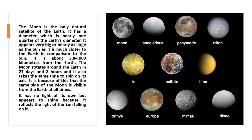Moon is a natural satellite of the earth. Its diameter is nearly one quarter of the earth and it looks almost as big as the sun because it is very close to the earth. It is about 3,40,000 km from the earth, and the moon rotates around the earth in 27 days and 8 hours, taking the same time to spin on its axis.